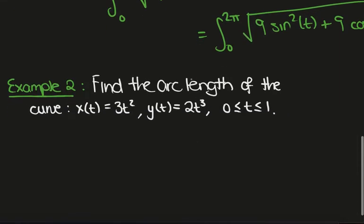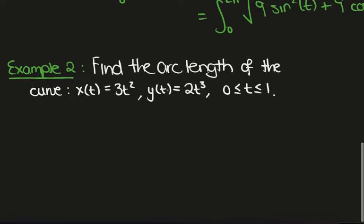Okay, let's look at a different example. Find the arc length of the curve x(t) equals 3t², y(t) equals 2t³ between 0 and 1.